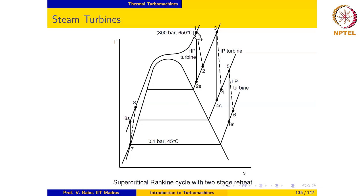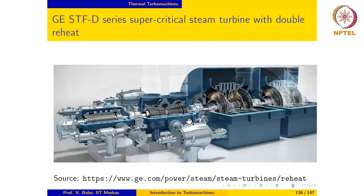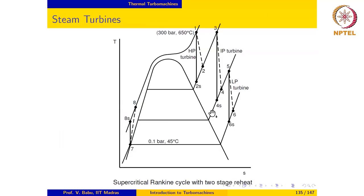It would not be practical or feasible to expand the steam in a single turbine from the highest pressure of 300 bar to the condenser pressure of 0.1 bar. So the expansion is split into three stages: an HP stage, an intermediate pressure stage, and a low pressure stage. Even within each stage, the expansion is quite challenging because the pressure ratios can be quite high, and special strategies are required to deal with this effectively.